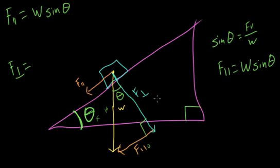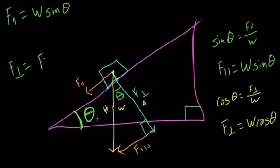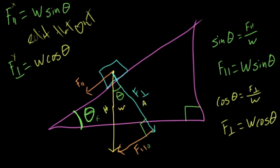Similarly, we need to find the perpendicular force. Well, this is adjacent, this is hypotenuse. So cosine of theta equals the perpendicular force over the weight. Again, this looks familiar. We've seen something sort of like this before. We get W cosine theta. The perpendicular force is W cosine of theta. So there we go.